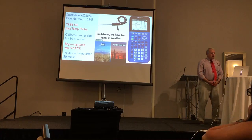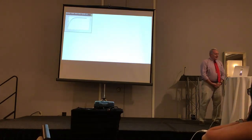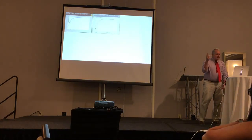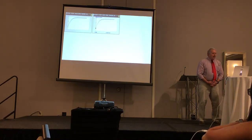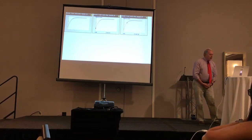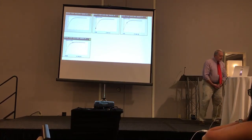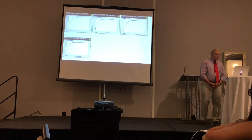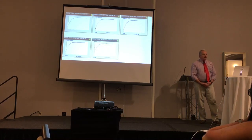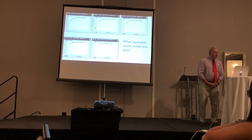The audience guessed 130 degrees. This is the graph: it starts at 0, 97 degrees. After 5 minutes it was 165, after 10 minutes it was 186, and after 20 minutes it was 191. So what kind of curve would model this data?